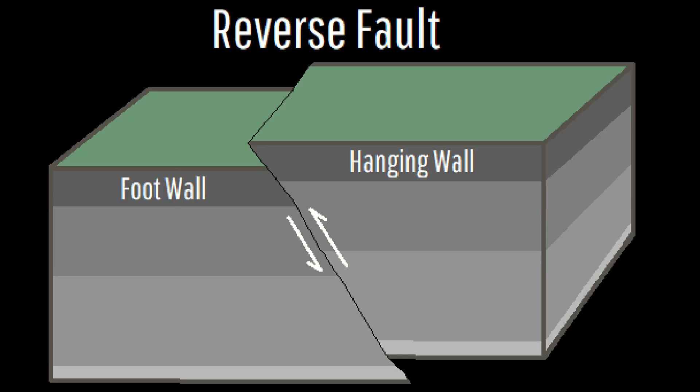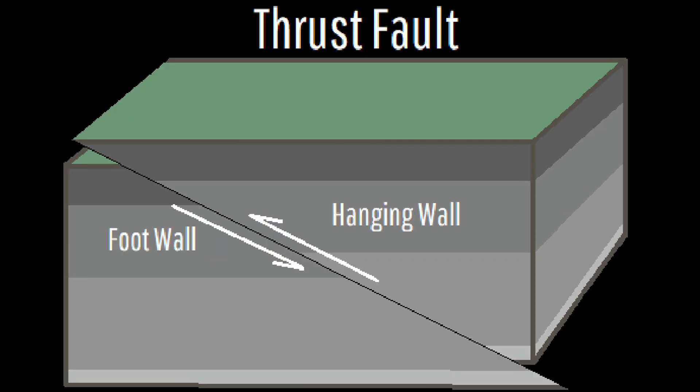In a reverse fault, the exact opposite is the case due to regional compression. However, reverse faults only describe fault lines which have a highly vertical dip of more than 45 degrees where the footwall moves downwards when compared to the hanging wall. In contrast, thrust faults are essentially reverse faults except they have dips of 45 or less degrees.